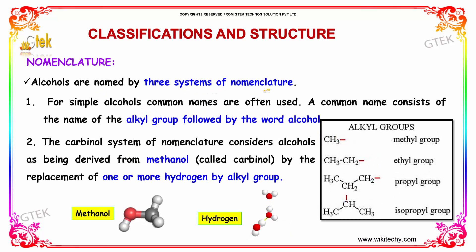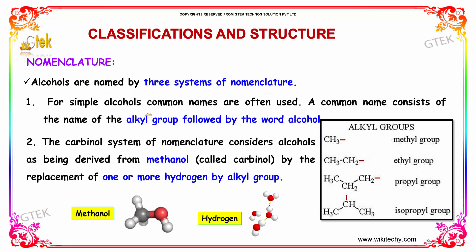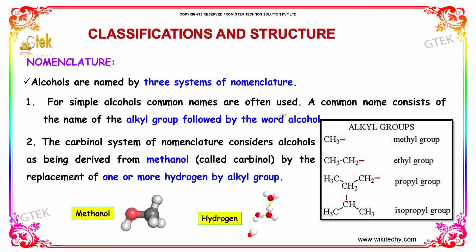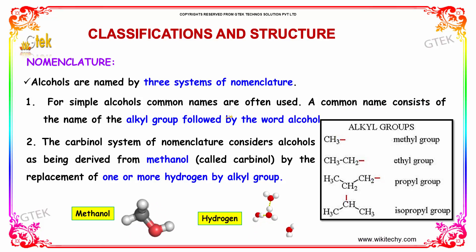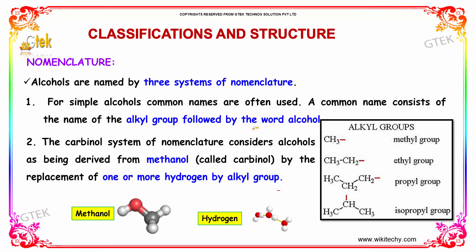Alcohols are named by three systems of nomenclature. For simple alcohols, common names are often used. A common name consists of the name of the alkyl group followed by the word alcohol.